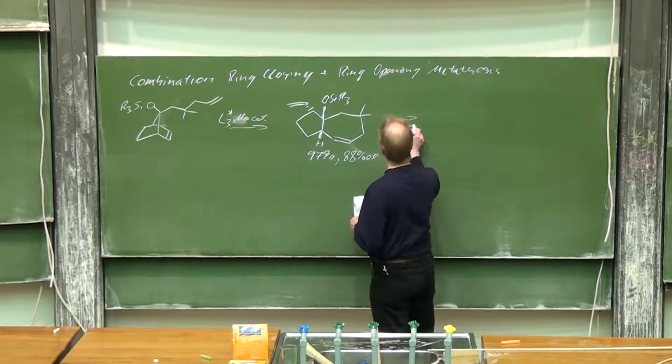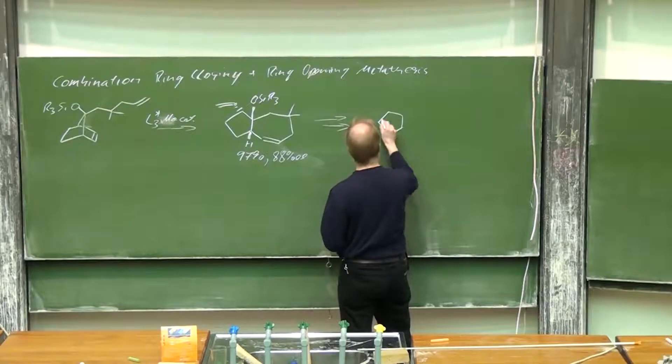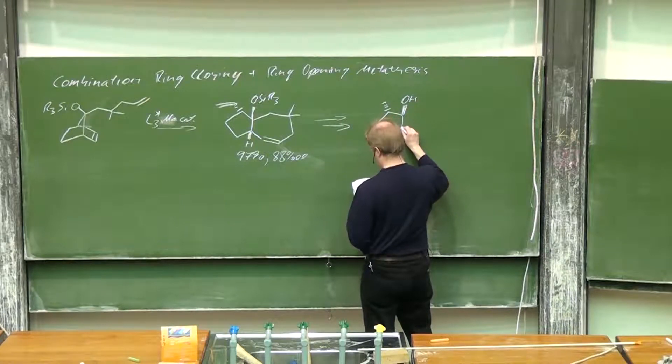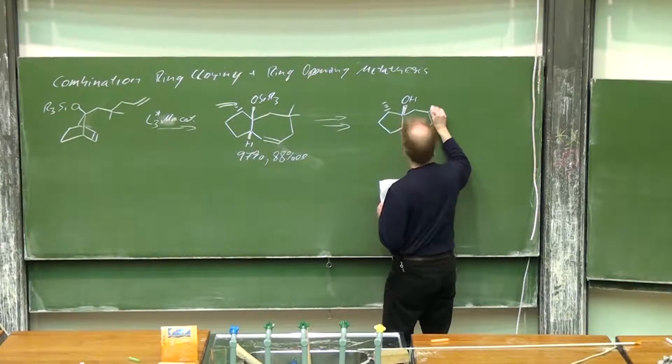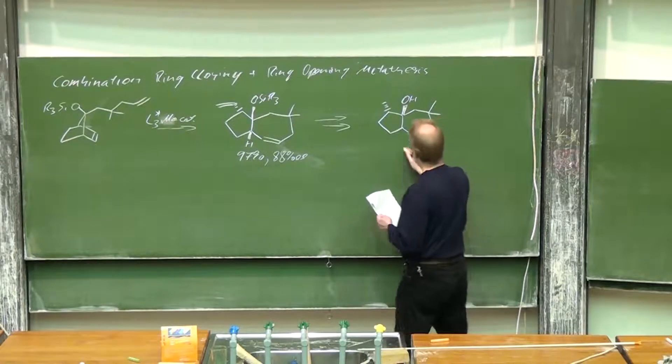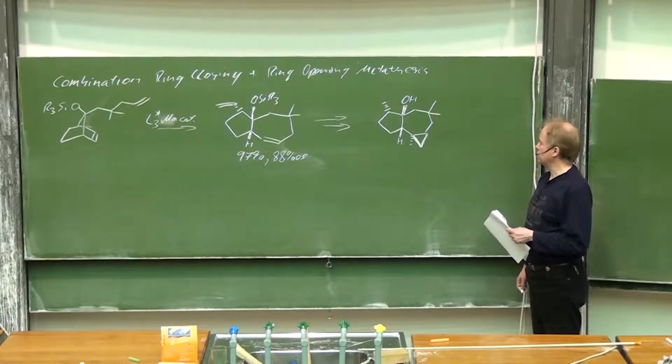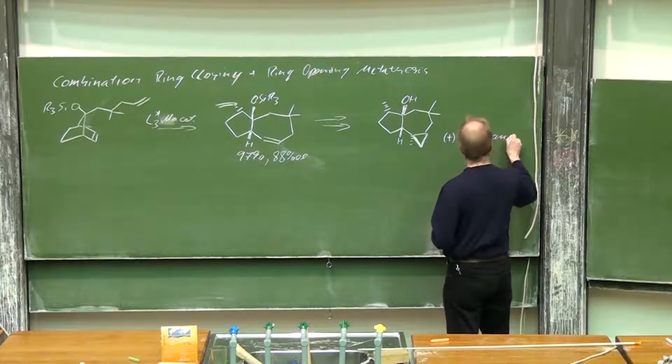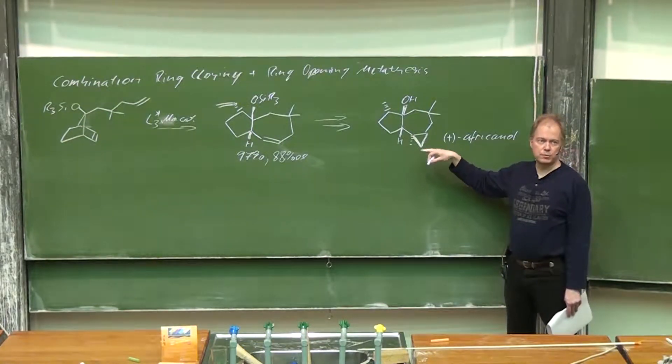So this is the crucial step in the synthesis of this target terpenoid, and indeed the final step in the synthesis of (+)-africanol was introducing the cyclopropane ring with Simmons-Smith cyclopropanation.